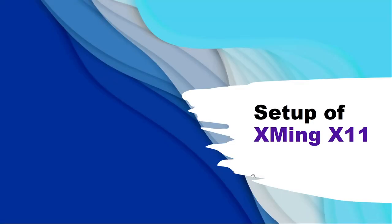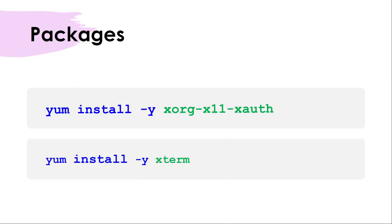In this tutorial I'll talk about how to set up Xming X11. The steps are pretty simple. You need to install two packages: xorg-x11-xauth and xterm. The xterm package is optional — it is only to verify that X11 display forwarding is working. If you do not want to verify it, this package can be omitted.